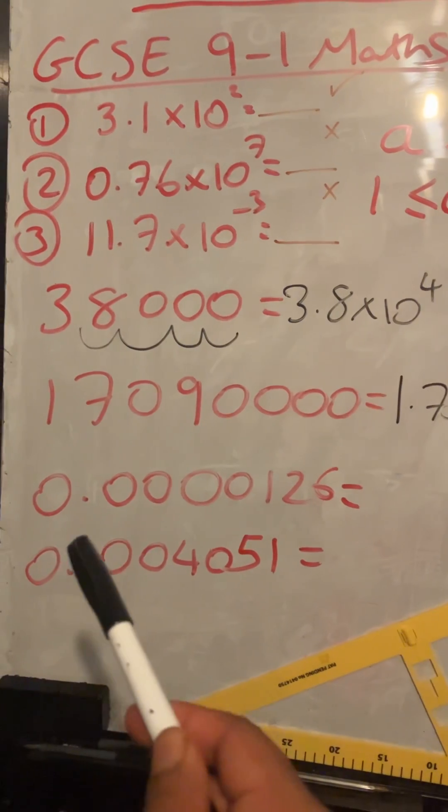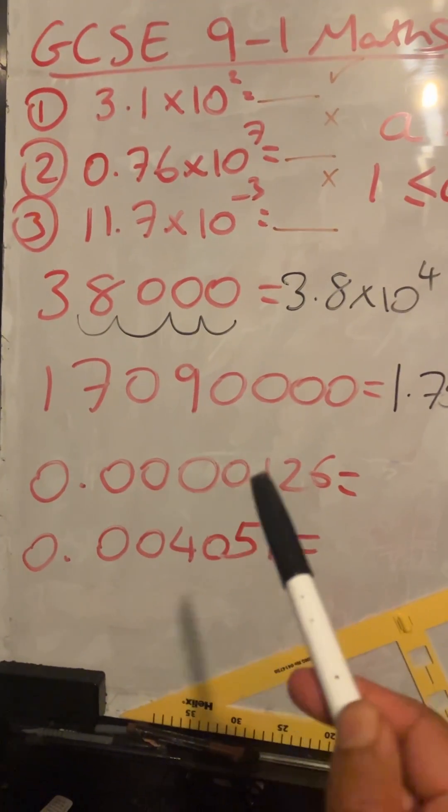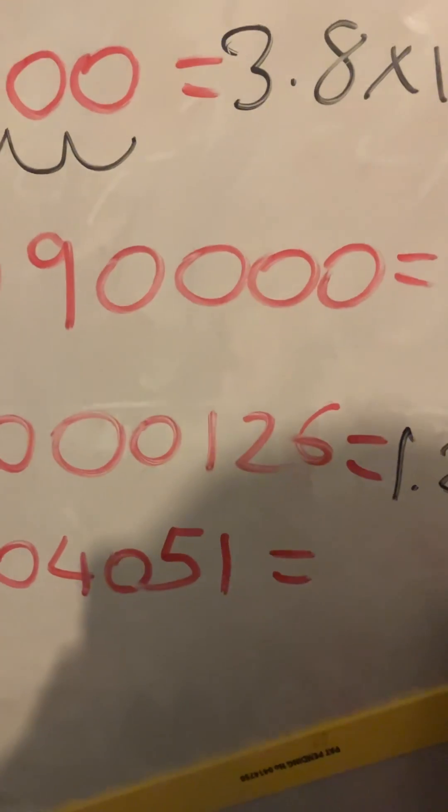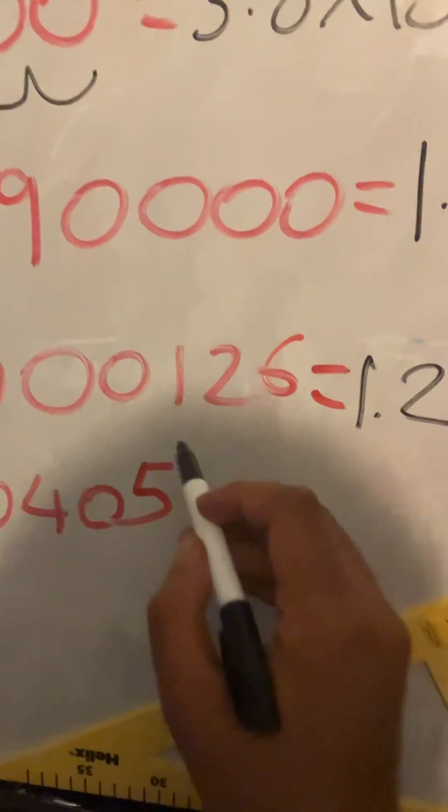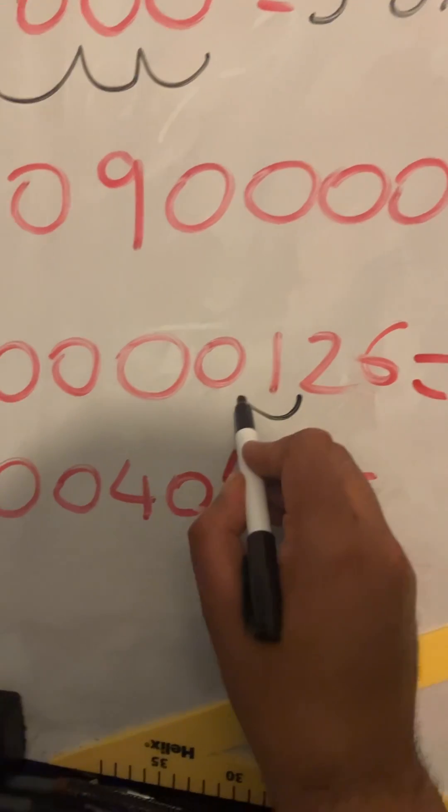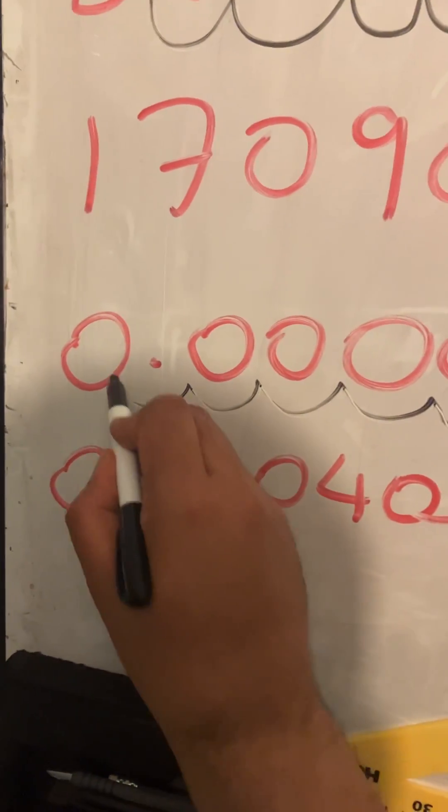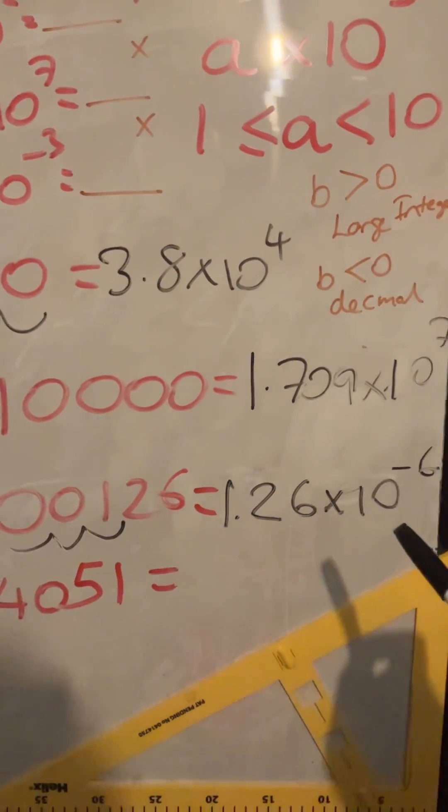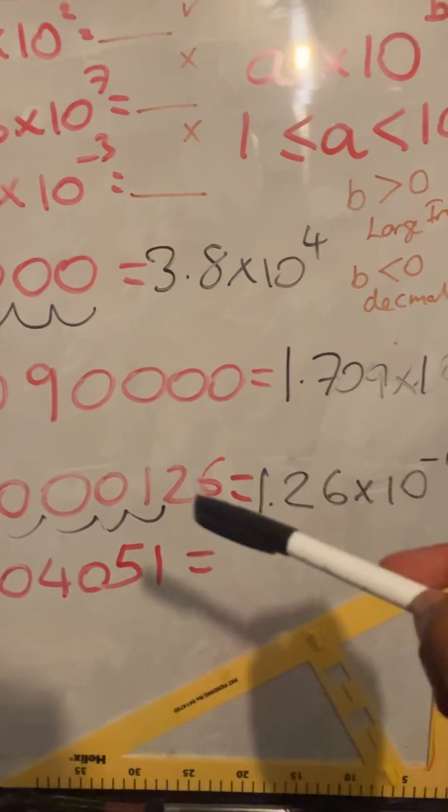This next one, 0.0000126, that's going to be 1.26 times 10 to the power of, if I start here, 1, 2, 3, 4, 5, times 10 to the power of minus 5. If it's a decimal, it's 10 to the power of a minus number.